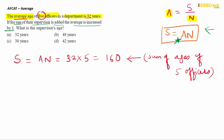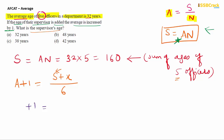Applying the same formula again — the new average is 33, the new sum is the original 160 plus the supervisor's age X, and the new number of observations is 6 (not 5, because one more person is added). So: 33 = (160 + X) / 6.